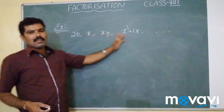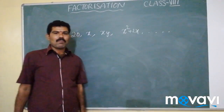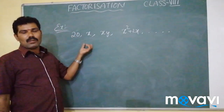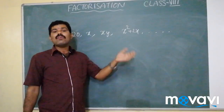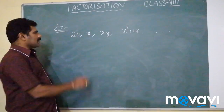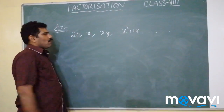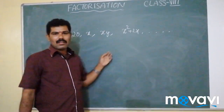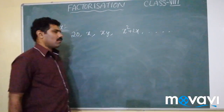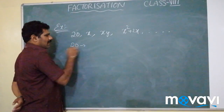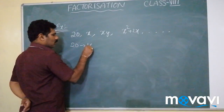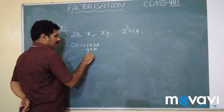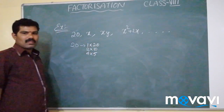Now, how do we factorize expressions? Factorization means writing a number in terms of multiples of its factors. So what are the factors of these expressions? For 20 we have already seen we can write 1 × 20, 2 × 10, and 4 × 5. What about x? x can be written as 1 × x — apart from that, you cannot write other values.